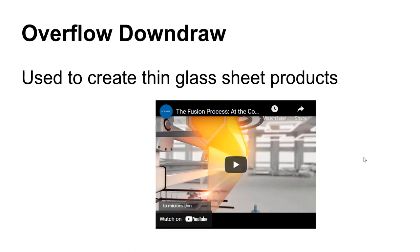Drawing is also used to make very thin sheet glass products via overflow down-drawing, where molten glass flows around a trough and comes together under its own weight to produce very thin, uniform glass sheets — demonstrated in a Corning YouTube video.